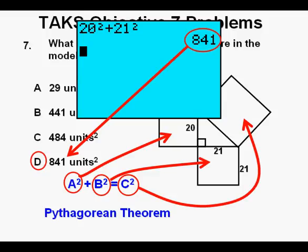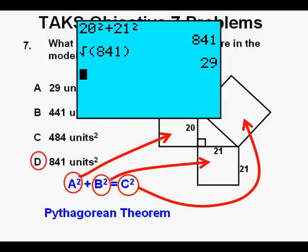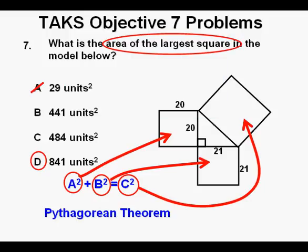But here's where the test writer is trying to get you. If we take this value of 841 and take the square root of it, we get 29, which just happens to be answer A. But this is why you need to pay close attention to what is being asked. Are they asking for the length of the hypotenuse? No. They're asking for the area and not the length of one side of the square. Be careful.